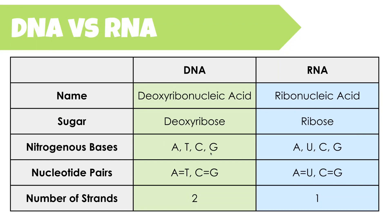The nucleotide monomers have nitrogenous bases that make them up. In DNA there are four nitrogenous bases. In RNA there are also four, with the exception that RNA does not have thymine (T); instead it has uracil (U). In terms of base pairing in DNA, A pairs with T and C pairs with G. Because RNA does not have T, the pairing is very similar except A will pair with U.